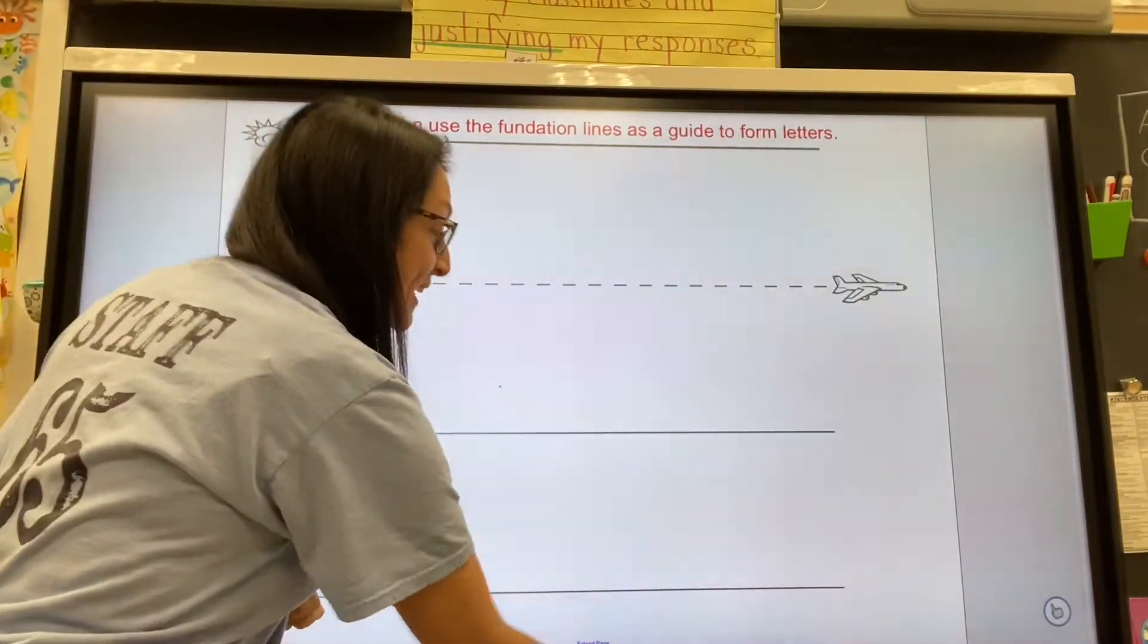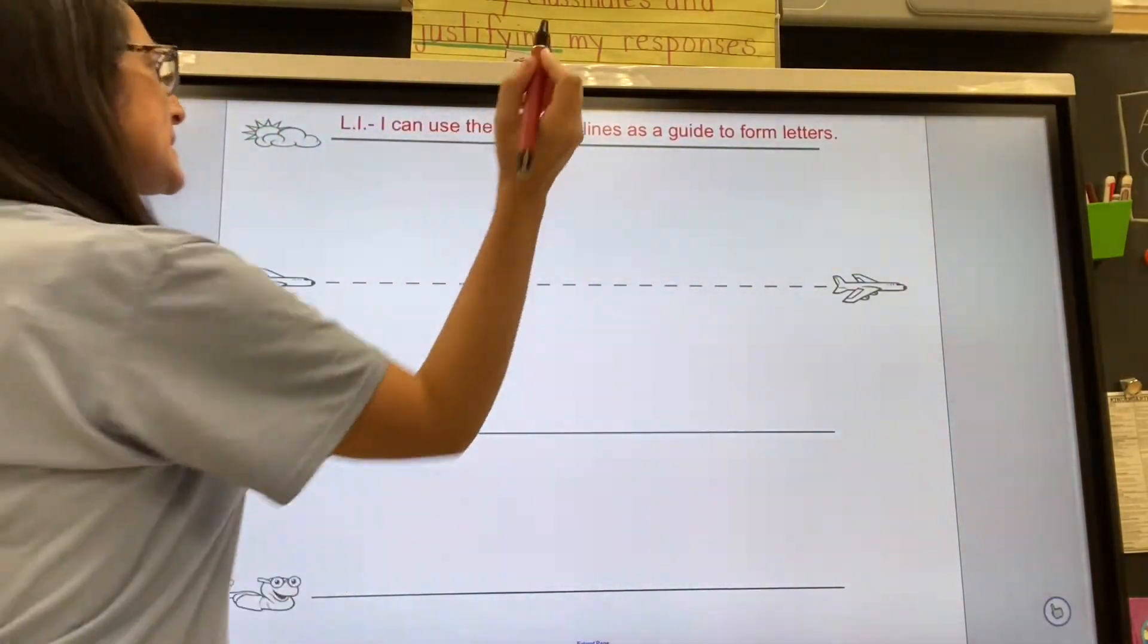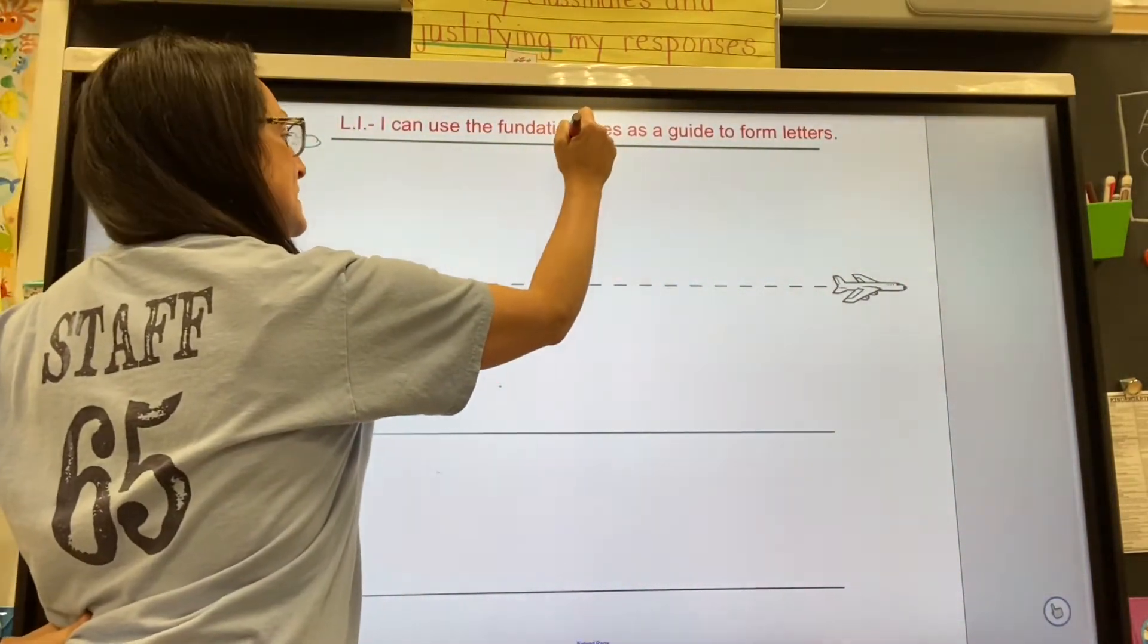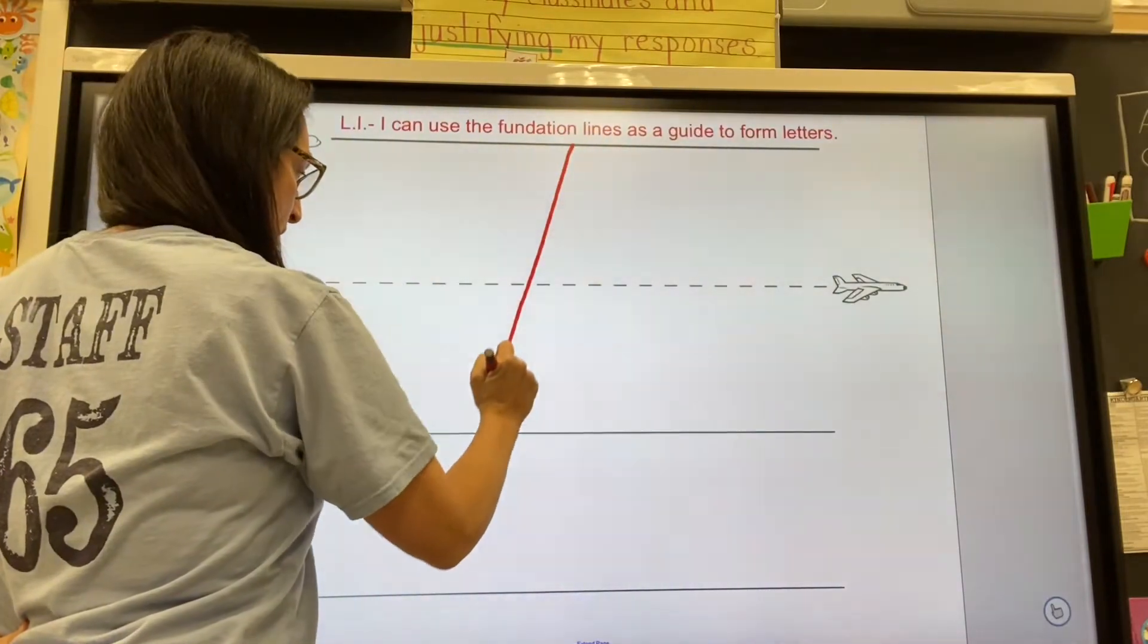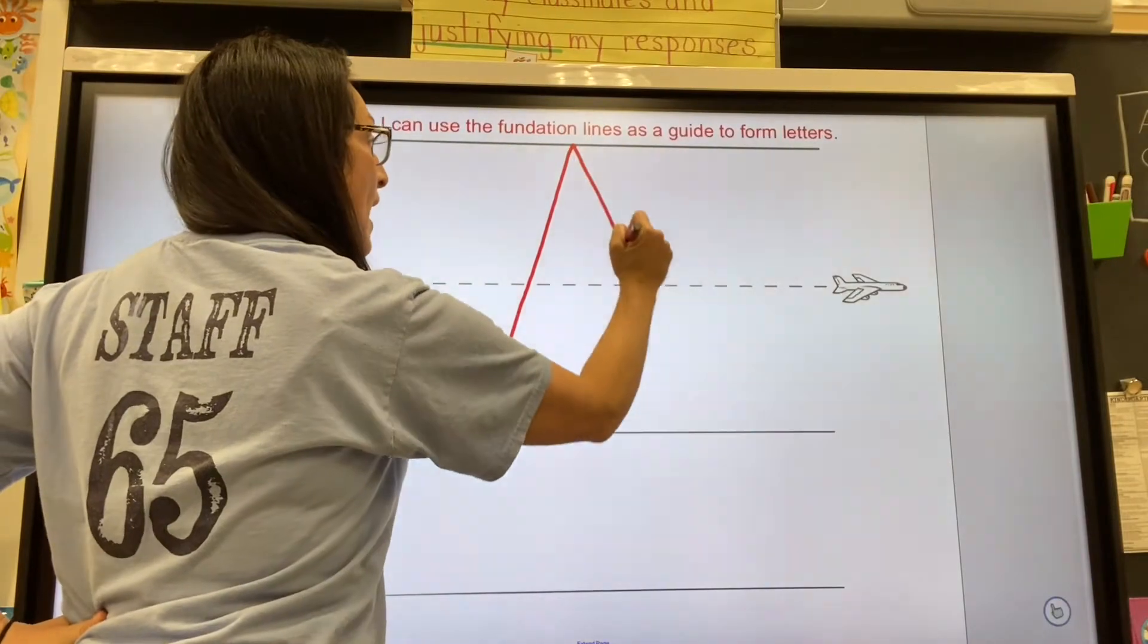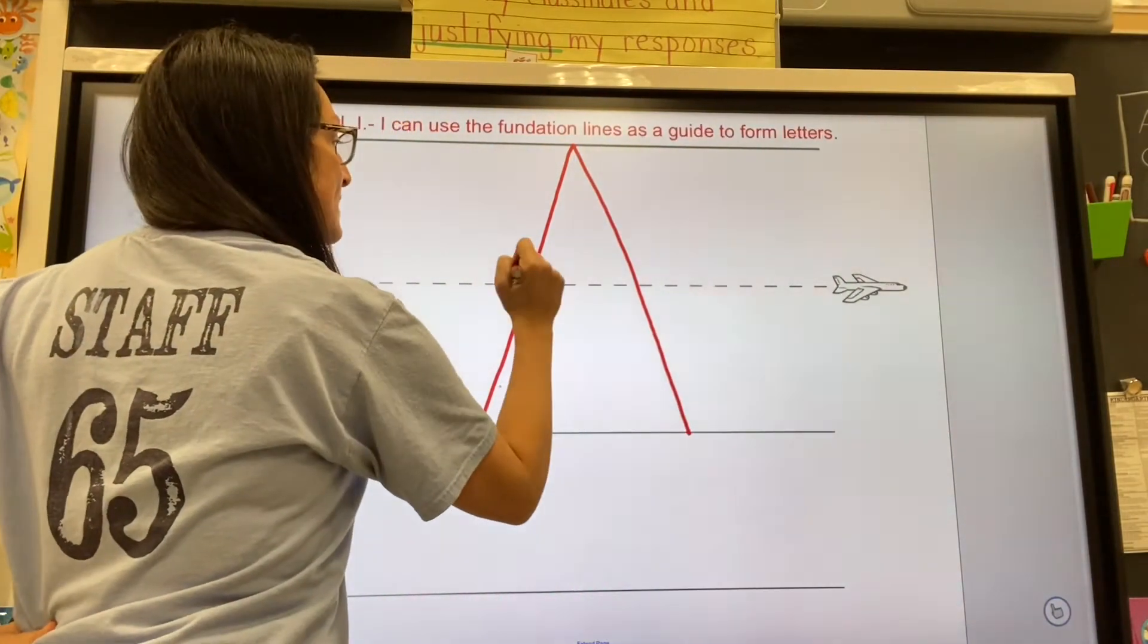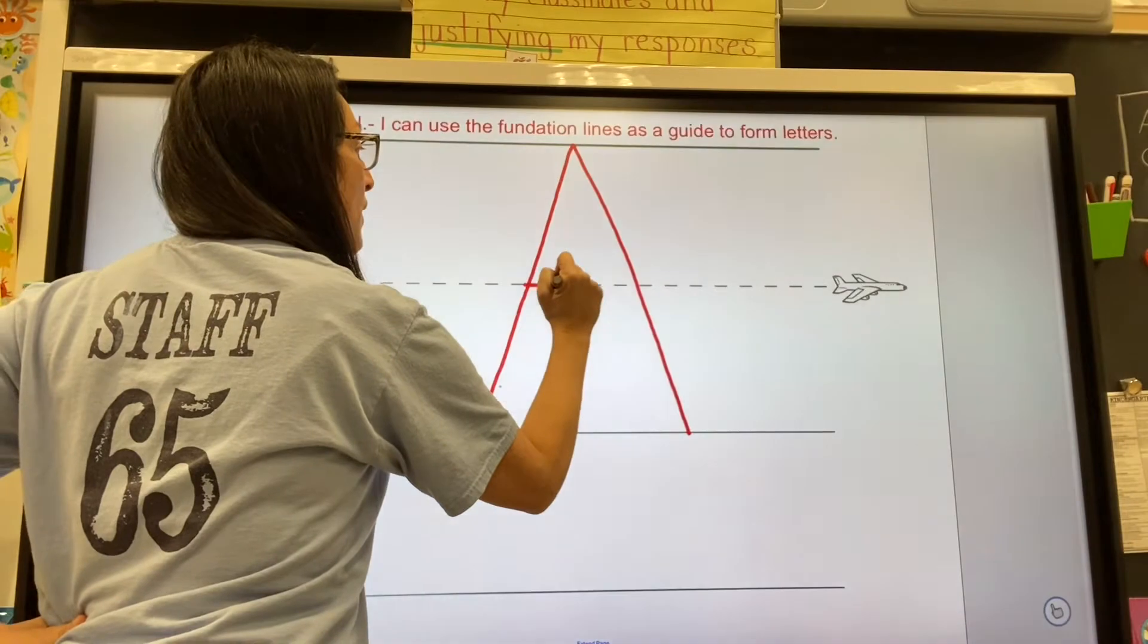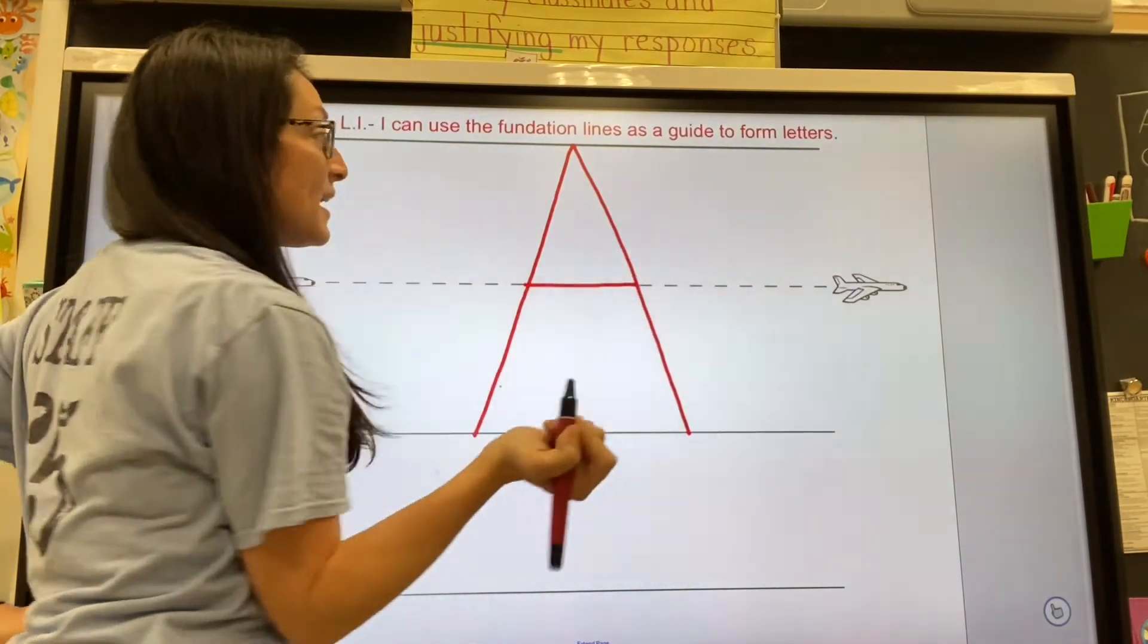So everyone repeat after me. Skyline! Slide to the grassline. Skyline! Slide to the grassline. And connect the middle on the plane line. Done!